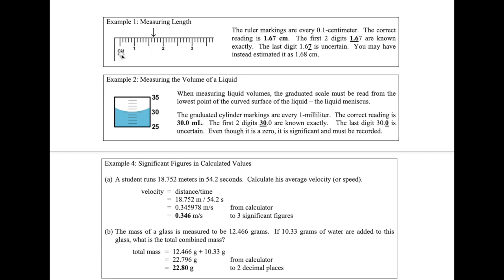The unit here is centimeters, and you can see the numbers 1 and 2. To find the size of each mark, count all the marks starting right after number 1 and keep going until you hit number 2. You'll find there are 10 marks. That means you have a distance of 1 centimeter divided by 10 marks, so each mark is 0.1 centimeter.